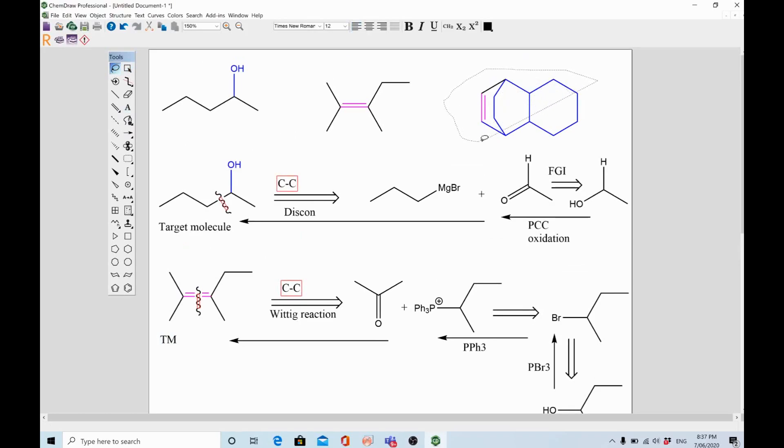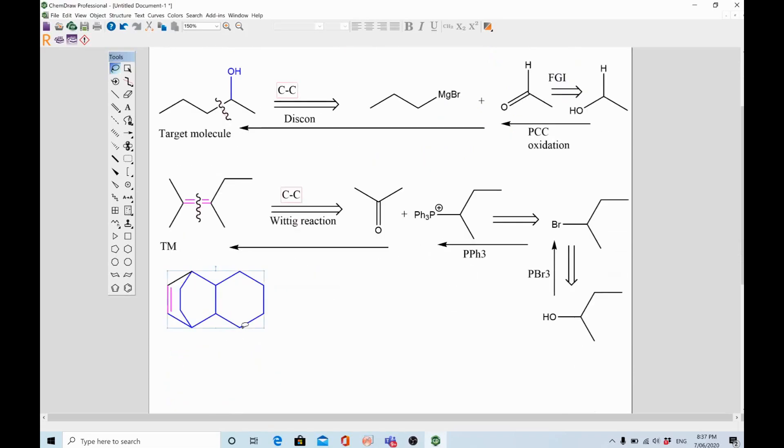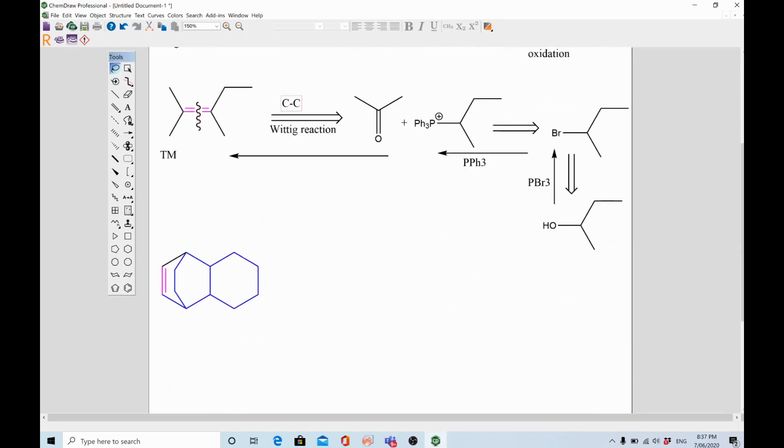The last example is also alkene, but I will show you a different method for this compound - a different synthetic strategy for the retrosynthetic analysis. As this is a cyclic compound, we will choose a different strategy - that is retro Diels-Alder. We will write retro Diels-Alder reaction. We will disconnect this compound from this area and this area. This will give you two components - this ring.